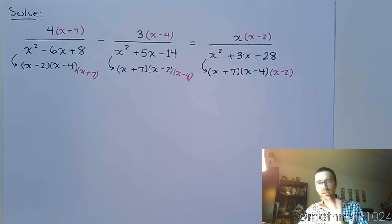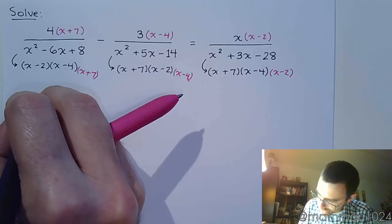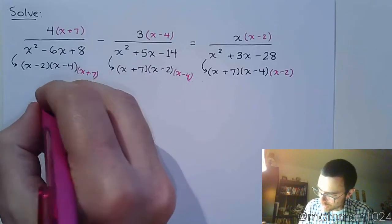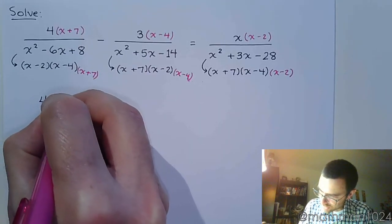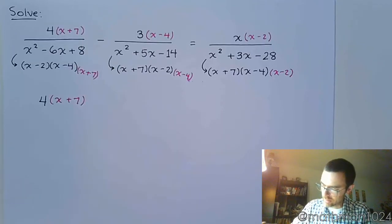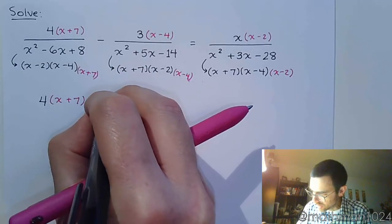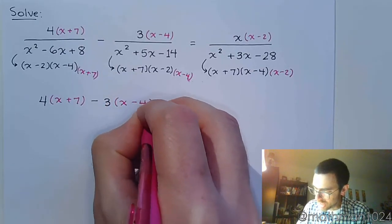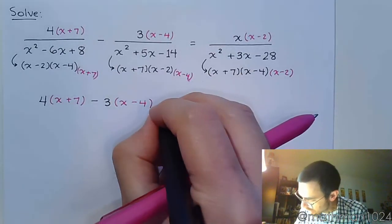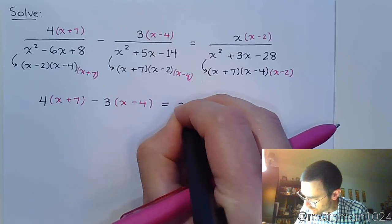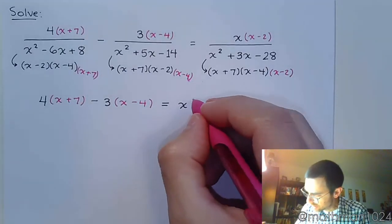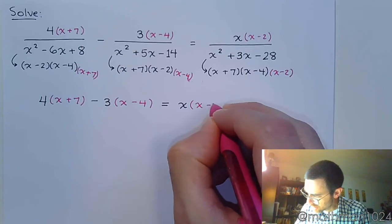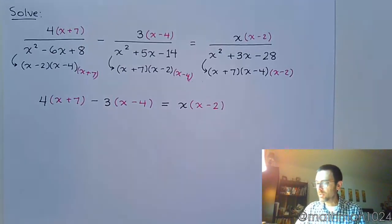Since everybody here has the exact same denominators, we're going to rewrite this using just the numerators. So this becomes 4 times (x + 7) minus 3, and this was times (x - 4), make sure you copy everything down correctly, equals x times (x - 2).